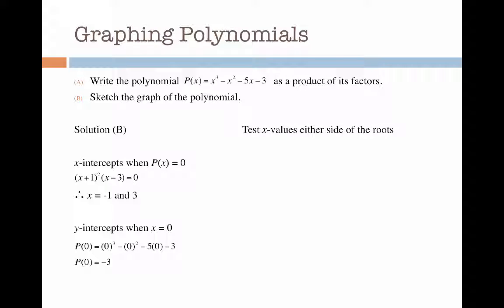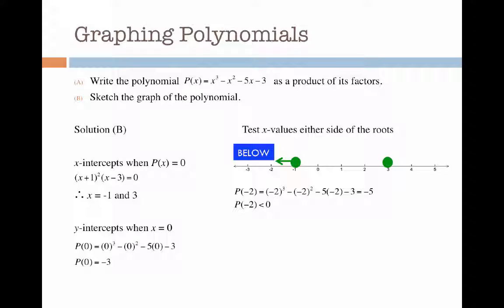Now I'm going to test values on either side of my x-intercepts. This will tell me where the graph is above and below the x-axis. To begin with I'll test something less than minus 1 — I'm going to choose p of minus 2. Substituting that into my polynomial, I get an answer of minus 5. This is less than 0, so the graph below minus 1 is below the x-axis. Between minus 1 and 3, I'll use p of 0, which I already know is minus 3, so that region is also below the x-axis.